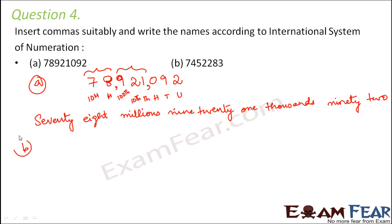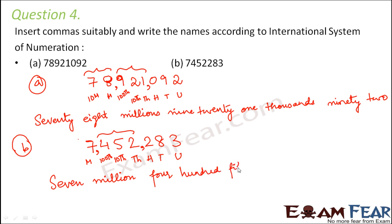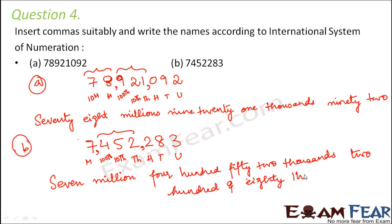Let's look at the next one: 7, 4, 5, 2, 2, 8, 3 — units, tens, hundreds, thousands, ten thousands, hundred thousands, million. Let's separate the millions and the thousands. So this becomes 7 million, 452 thousand, 283. This is how we named it as per the international system of numeration.